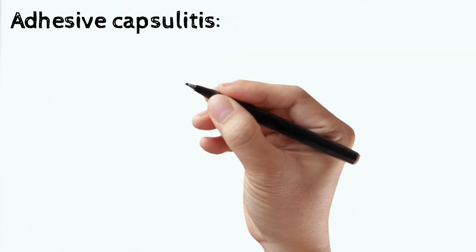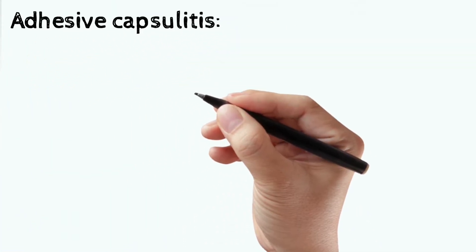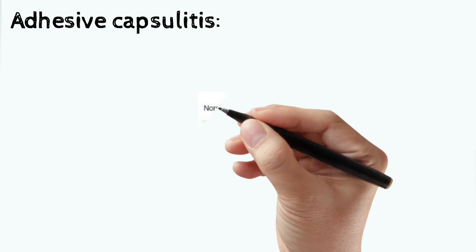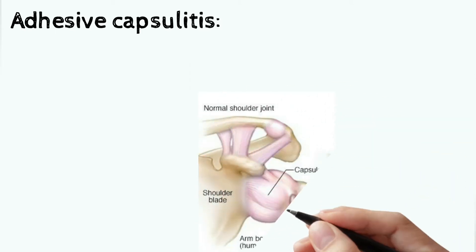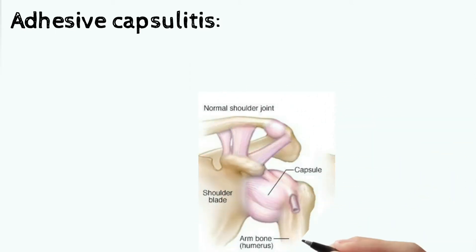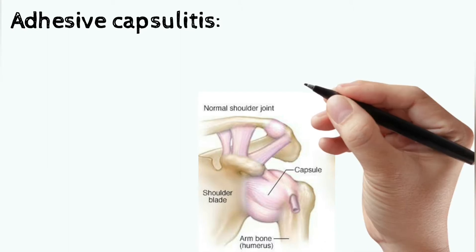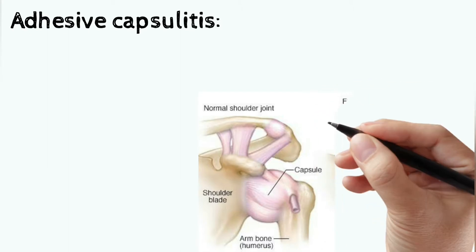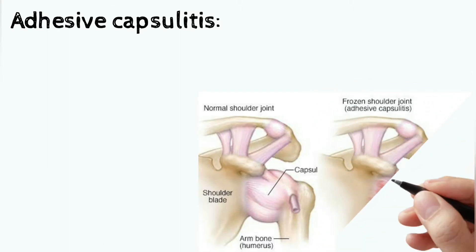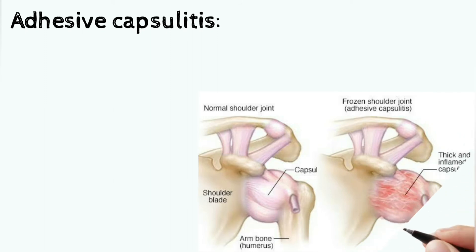First, we go into adhesive capsulitis. Here we can see a normal shoulder joint. Now we can see a frozen shoulder joint or adhesive capsulitis, which is thick, inflamed, and reddish.